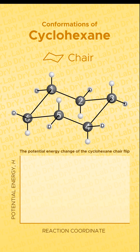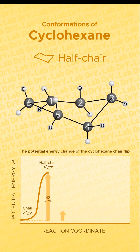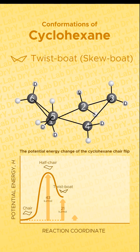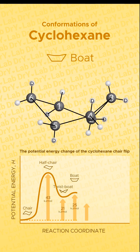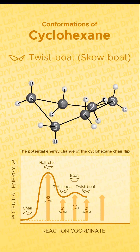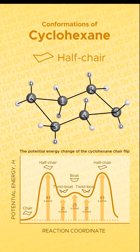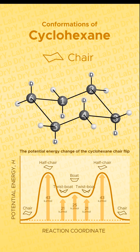Cyclohexane goes through conformations of differing energies, called the chair, half chair, twist boat, and boat, and again the twist boat and half chair, and arrives at the chair conformation that is the flipped version of the chair before.